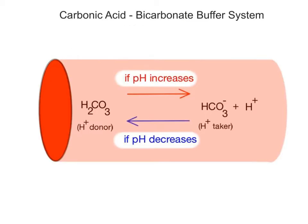The most important buffering system in the blood and extracellular fluid is the carbonic acid bicarbonate buffer system. In this system, carbonic acid, H2CO3, acts as a weak acid and a hydrogen ion donor, while bicarbonate ion, HCO3, acts as a weak base and a hydrogen ion taker.